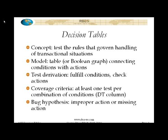Along with a systematic process for the derivation of tests, there is, for many of these techniques, a rule for when the technique and the model is done suggesting new tests to you. These are referred to as the coverage criteria. In decision tables, the coverage criterion is that there has to be at least one test per combination of conditions. Each column in the table represents a unique combination of conditions. A couple of things to mention about that coverage criteria.